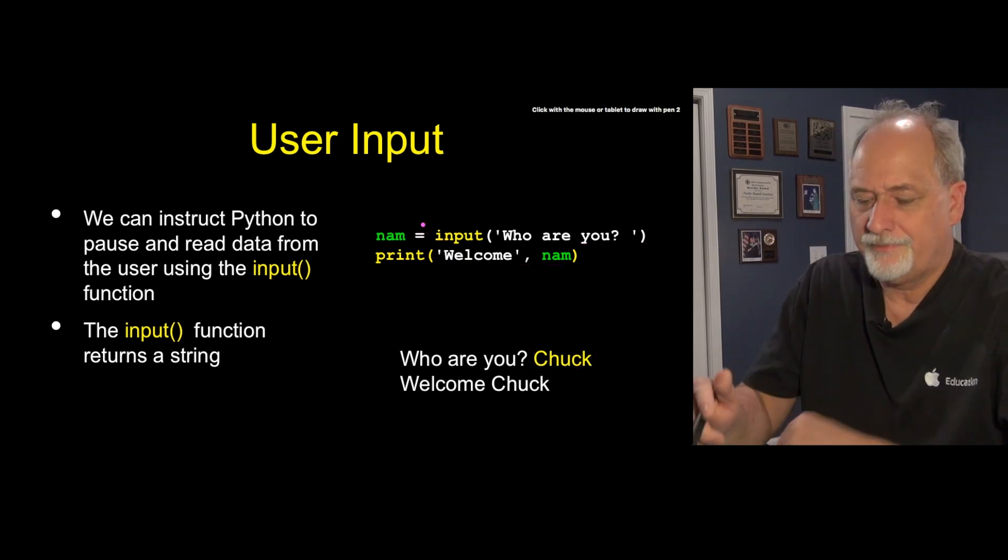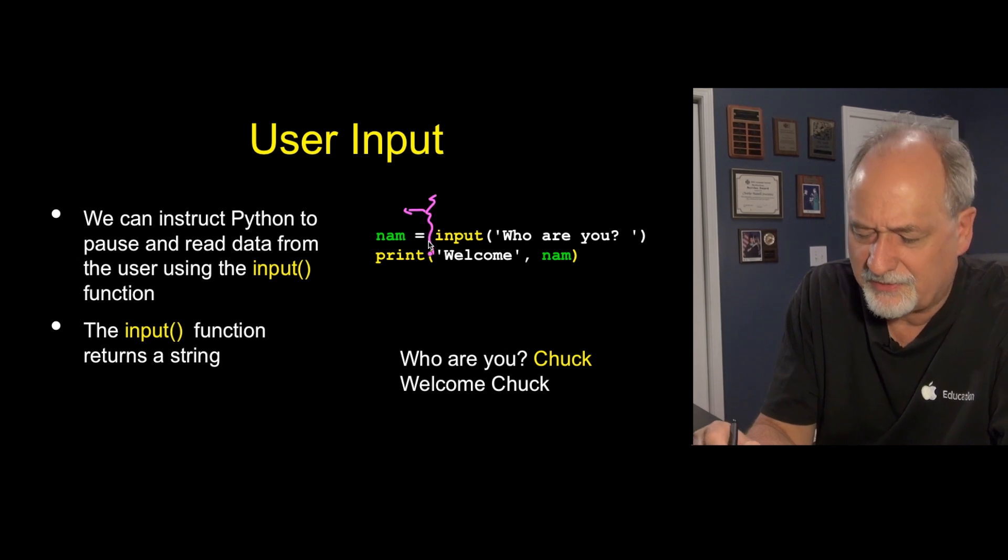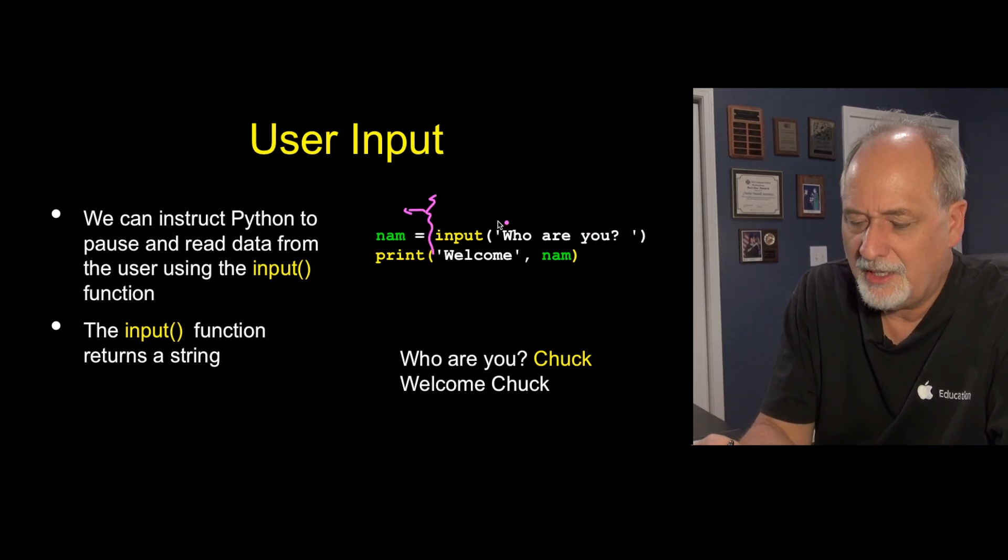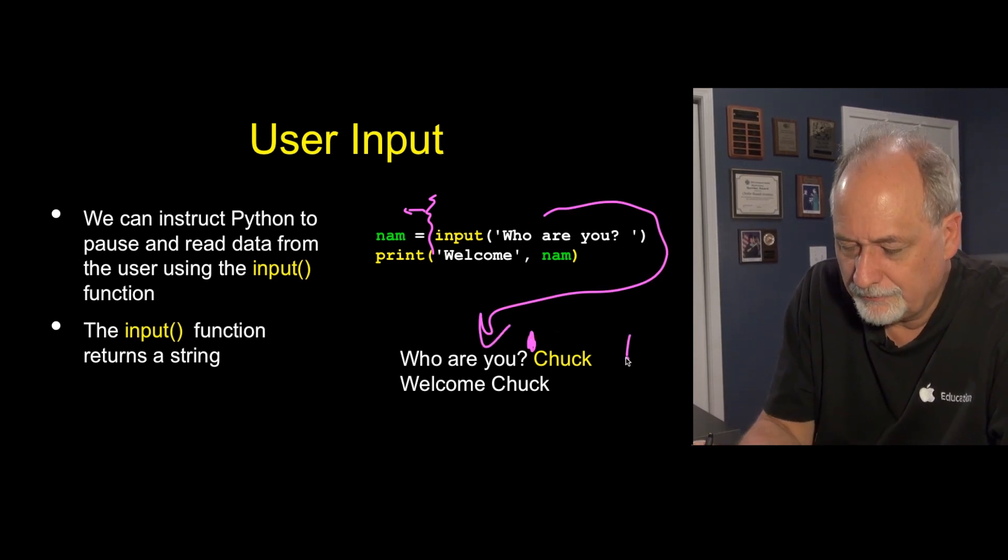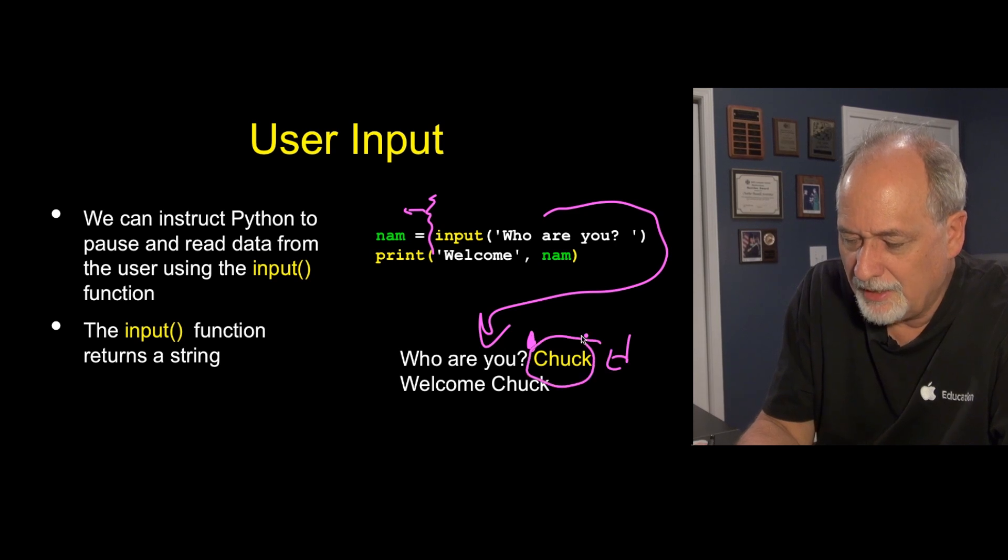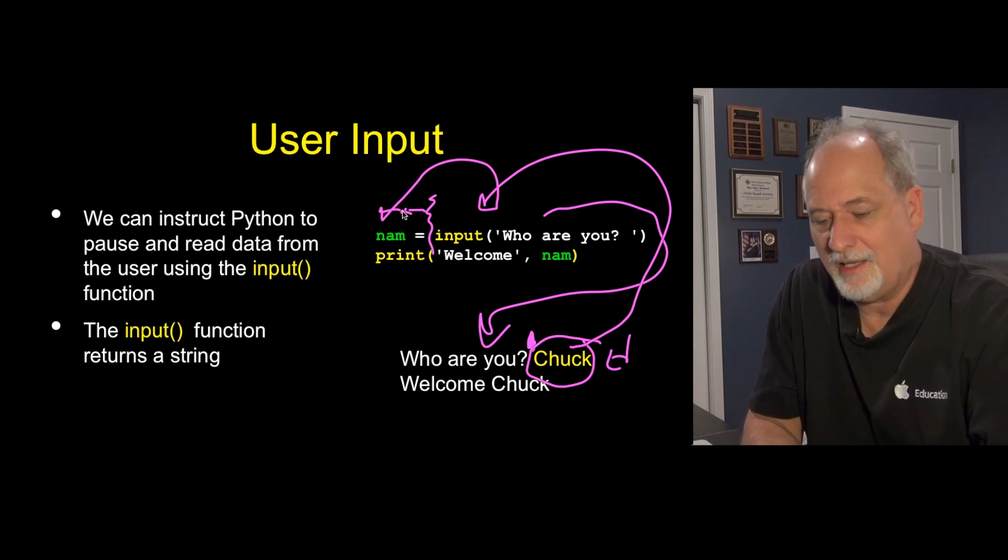Let's do that again. It's evaluating an assignment statement. Remember, it's kind of this way. It's do this right side first. It writes this out, then it waits, until we hit the enter, and takes this chuck, and that becomes the result of this input, which is then assigned in to NAM.